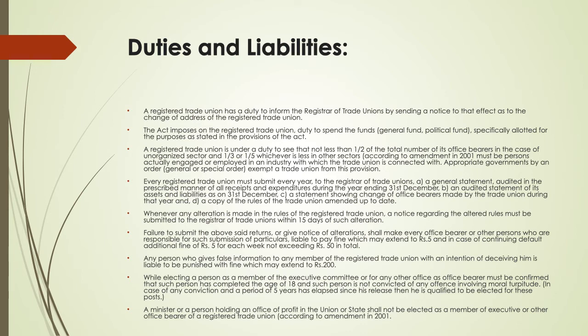The fourth duty: every registered trade union must submit every year to the registrar of trade unions: (A) a general statement audited in the prescribed manner of all receipts and expenditures during the year ending 31st December; (B) an audited statement of its assets and liabilities as on 31st December; (C) a statement showing changes of office bearers made by the trade union during that year; and (D) a copy of the rules of the trade union amended up to date.